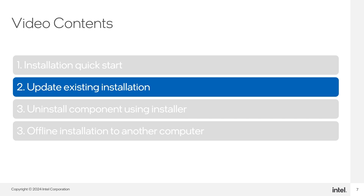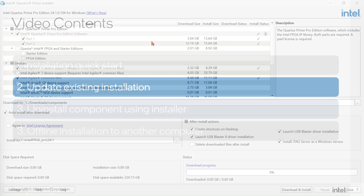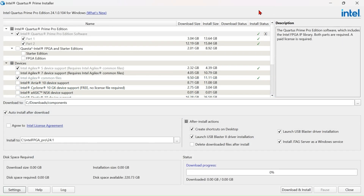After installation, you may decide to use a different component or device. In this case, you can use the same installer to update your existing installation. To update your current Quartus installation, use the same installer version as your Quartus installation.